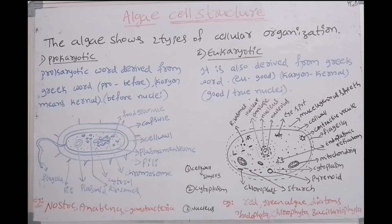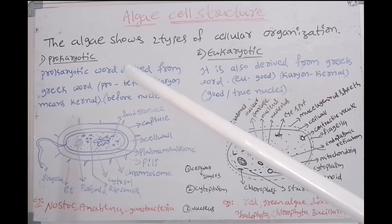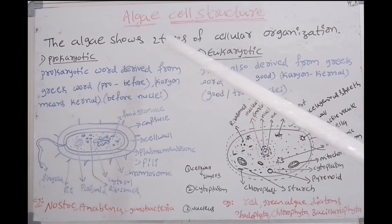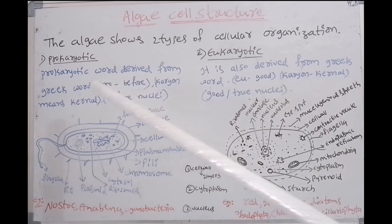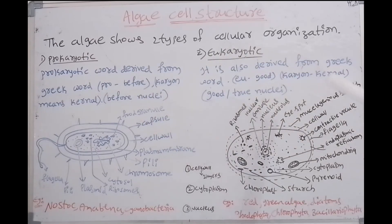The algae cell shows two types of cellular organization: first one prokaryotic, second one eukaryotic.